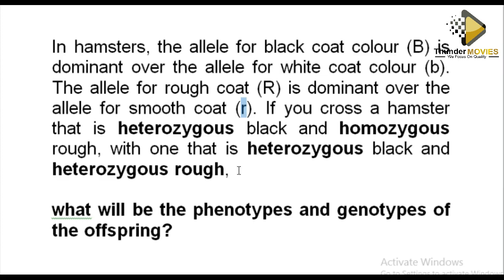Someone can ask why we are not talking about smooth. Smooth is a recessive character — it can only exist when there are no dominant alleles. Once the dominant allele capital R is present, it will change the phenotype. No longer smooth — it will become rough. So in this case they want us to cross the two individuals.